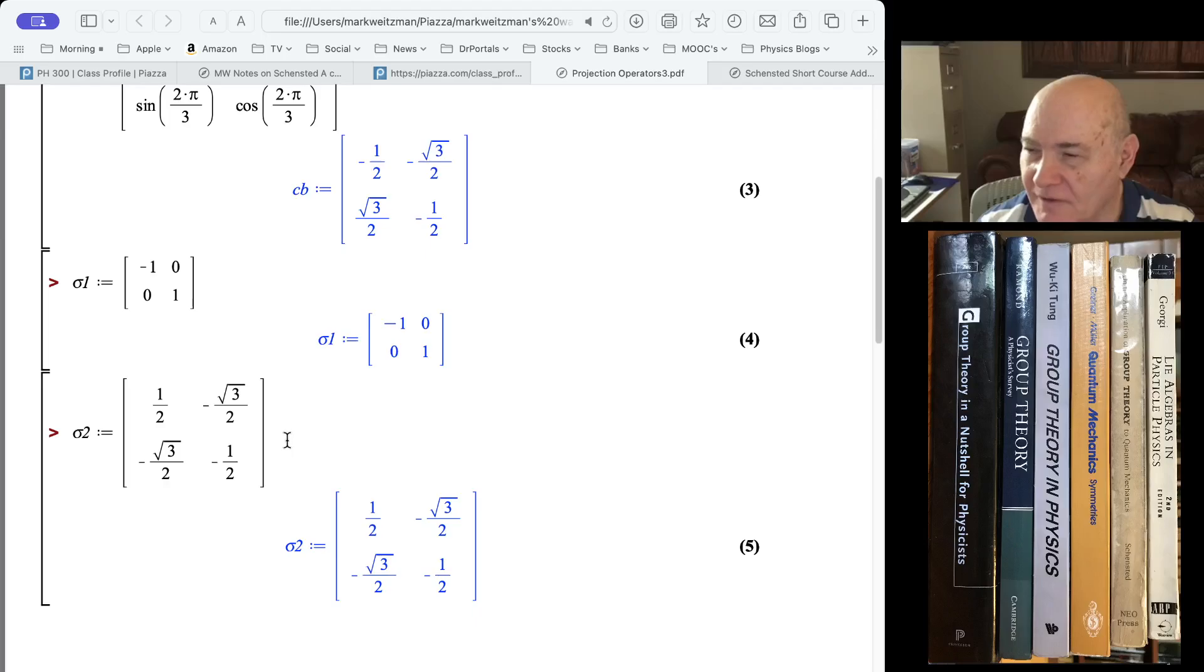The reflection around the y-axis is very easy. It just turns X to minus X, and Y is unchanged. So that's this one, this matrix, sigma 1.